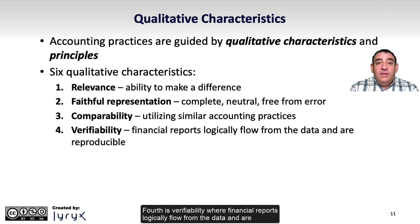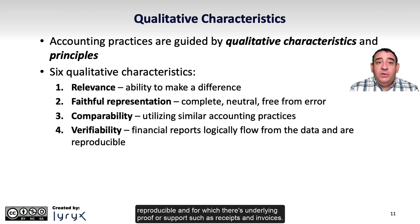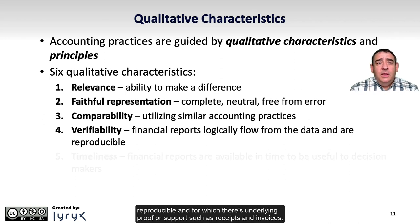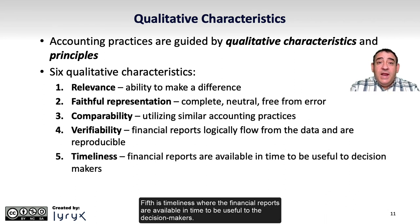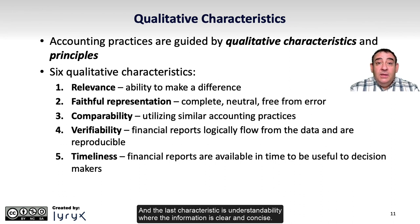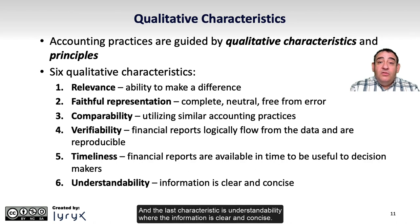Fourth is Verifiability, where financial reports logically flow from the data and are reproducible, and for which there is underlying proof for support, such as receipts and invoices. Fifth is Timeliness, where the financial reports are available in time to be useful to the decision makers. And the last characteristic is Understandability, where the information is clear and concise.